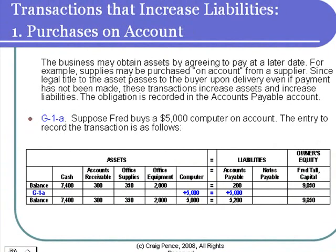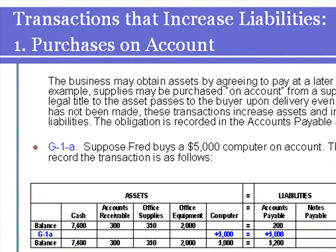Now we have a transaction in which an office computer is purchased, but it's purchased on account. Legal title passes to the buyer at the point of sale, so when Fred took delivery of the computer and brought it back to the business, legal title had passed to Fred. An asset is a thing that we own that is going to provide benefits through future periods. Therefore, the computer is an asset, and we need to record an increase in our computer account to record the purchase. We can't reduce cash because we haven't paid for the computer yet, but we can record the obligation to make the payment in our accounts payable liability account. We now owe $5,200 to vendors — one is the office supply company, and the other is the store that we bought the computer from.